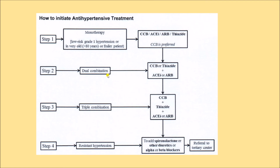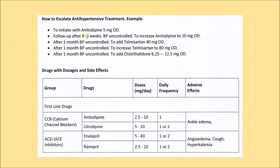When dual combination fails, triple combination is used: a CCB and a thiazide plus either an ACE inhibitor or ARB. When everything fails and it is resistant hypertension, spironolactone or other diuretics, alpha blockers, or beta blockers are added as second-line drugs. For example: start with amlodipine 5 mg OD (calcium channel blocker); after four to six weeks, increase the dose to 10 mg; after one month of uncontrolled blood pressure, add telmisartan (ARB); increase its dose after another month; then add chlorthalidone 6.25 to 12.5 mg (thiazide diuretic) if still uncontrolled.